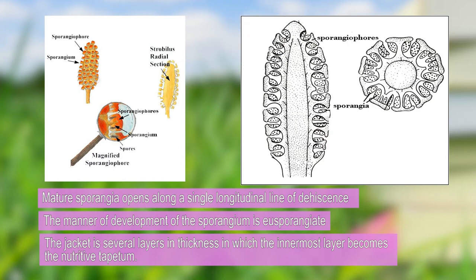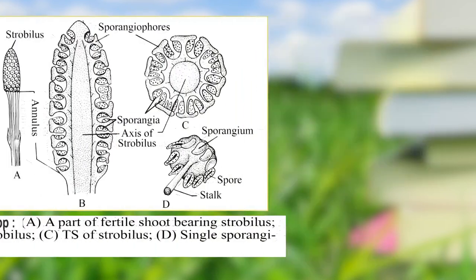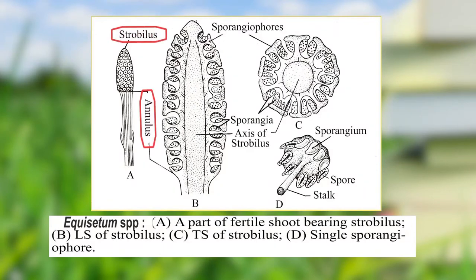The manner of development of the sporangia is of the eusporangiate type — it is not formed from a single initial; other contemporary cells are also involved in the formation of the sporangia. Here we have shown various structures starting from the strobilus and the annulus. We have made a TS and an LS where all the structures we were talking about can be seen.